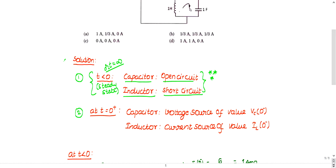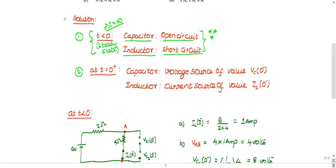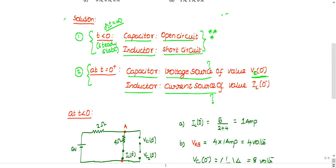At t equal to 0 plus, the behavior is completely different. You need to replace the capacitor with a voltage source and an inductor with a current source. You may ask: what should be the value? It should be the value of the steady state voltage across that capacitor — the open circuit voltage you calculated during steady state.